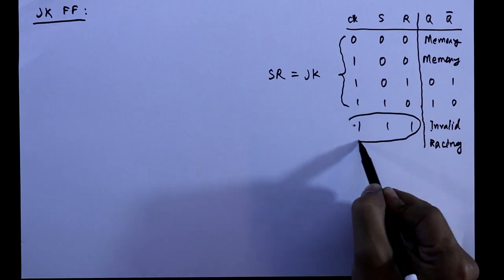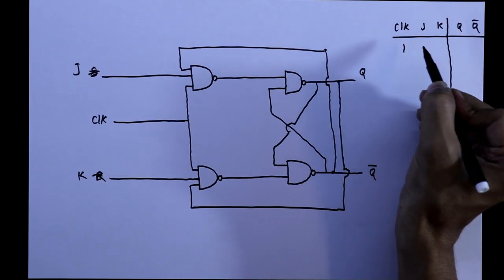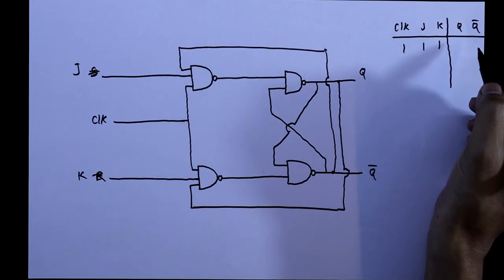So today we will analyze this fifth condition. The fifth input is CLOCK 1, J 1 and K 1. Now we will analyze its output.